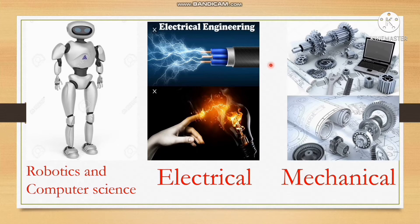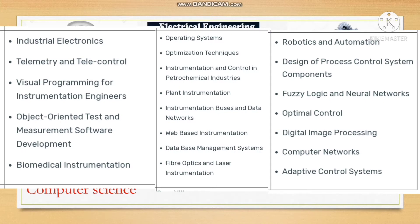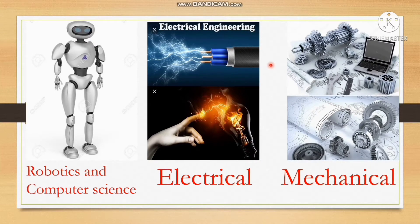EIE means Electronics and Instrumentation Engineering. If you look at the syllabus of this branch, you will find topics related to electrical, mechanical, computer science, robotics, sensors, and many more things. So this is a specialized and mixed branch.